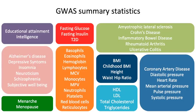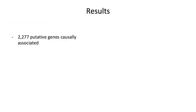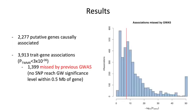We applied TWMR to 43 different complex traits, and in total we found more than 2,000 putative causal genes associated with at least one phenotype, resulting in almost 4,000 trait-gene associations. Interestingly, more than 30% of these trait-gene associations were missed by previous GWAS — meaning that within 500 KB of the gene found associated by TWMR, no SNP reached genome-wide significance, likely due to power issues.